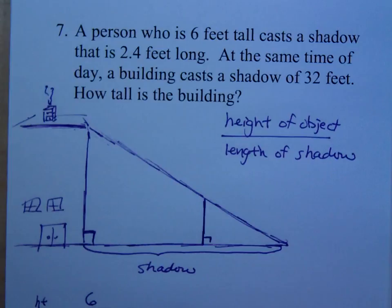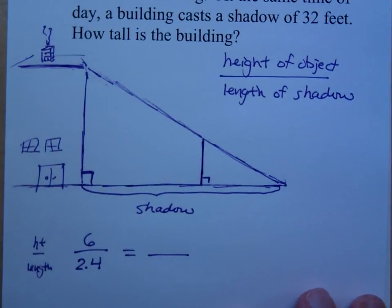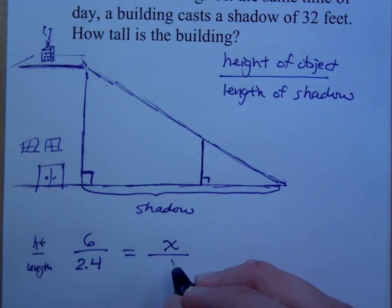So what's the height of the building? What's the height of the building? X, 32? Unknown. Is it X or is it 32? Oh sorry guys. It's unknown because it says how tall is the building? I don't know how tall it is, but I do know that the length of the shadow is what? 32. I do know that that's 32.